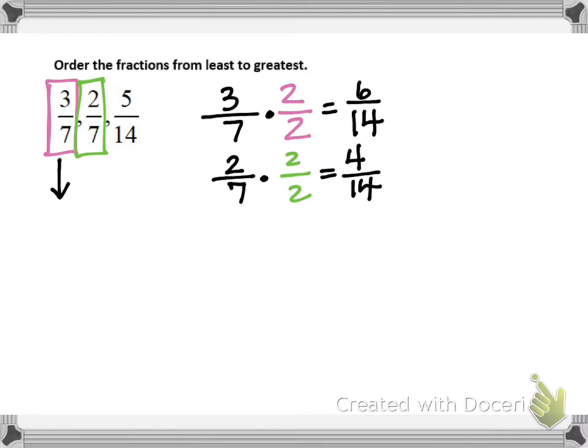Now let's rewrite these three fractions as equivalent fractions with a common denominator of 14. 3/7 becomes 6/14. 2/7 is now 4/14, and 5/14 remains as 5/14.